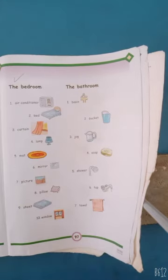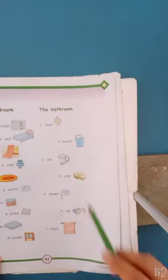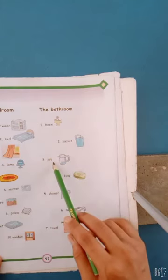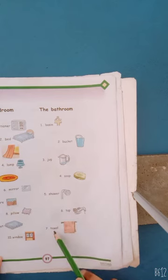These are things found in the bedroom. Now we will revise bathroom things: basin, bucket, jug, soap, shower, tap, towel.